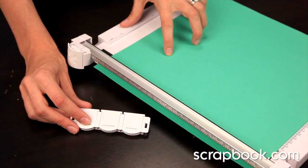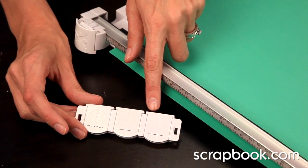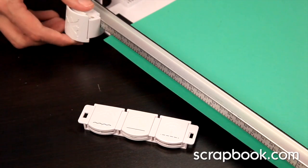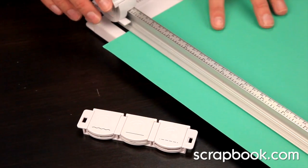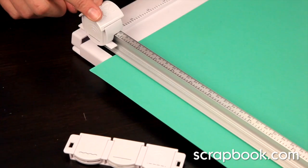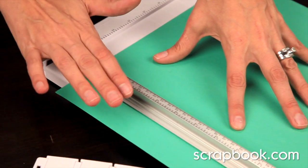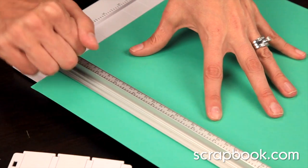The trimmer does come with four blades, two straight, one wavy, and one perforated. You can easily change them out from this cartridge here. It's made with a large ergonomic cartridge, and so you just firmly press and slide back and forth to cut your paper.